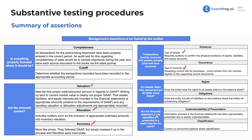Are financial statement items classified and presented in a useful way for users? Can a reasonable user understand and read them? This is important because if all the numbers are correct but presented confusingly, that doesn't help anyone. Our two assertions here are understandability and classification. Understandability is concerned with information being clearly presented; classification is concerned with items like current versus non-current balance sheet items being properly classified.